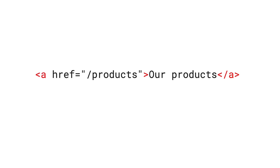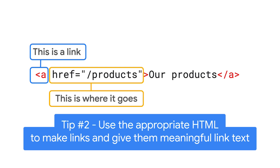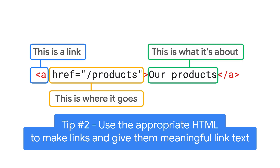Googlebot always tries to discover as many of your pages as possible. So whenever it finds a URL in your pages, Googlebot might try crawling it as well. There are a few things you can do to make it clear to your users and Googlebot that something is a link. HTML has an element dedicated for links — the A element. For an A element to be a proper link, it should have a URL in its href attribute. This can either be a relative or absolute URL — either way is fine.